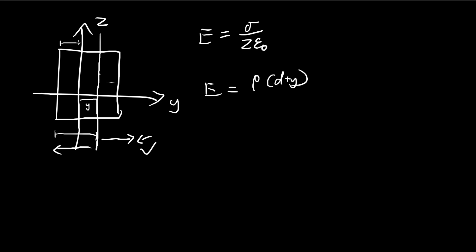So recall that this length here is d. This length here is y. And then this length here is d minus y. So this is the electric field from this section.